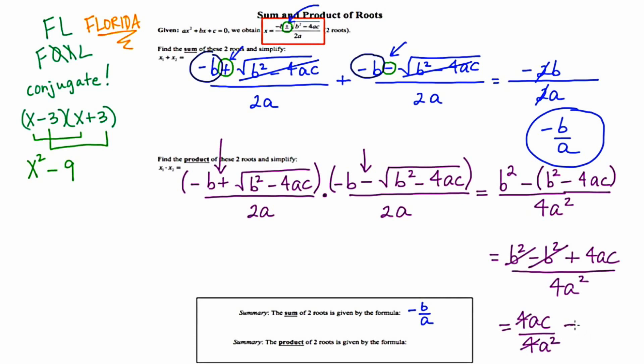One set of a's cancels out, leaving me with c over a. So the formula for product of roots is c over a, and I'm going to write this in the summary box down at the bottom of the page.